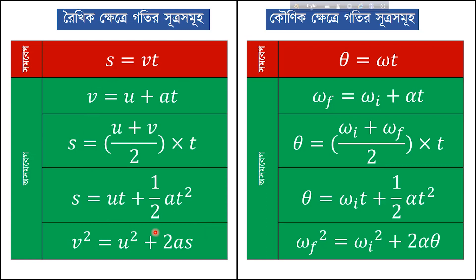These quantities — in the linear kinematic equations, wherever s appears put θ, wherever u appears put ωi, wherever v appears put ωf, wherever a appears put α. That gives us the rotational kinematic equations. As shown in the previous slide, the parallel variables are: s→θ, v→ωf, u→ωi, a→α.